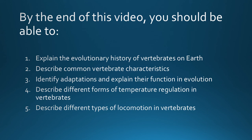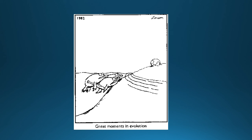Now revisit the five learning points we laid out at the beginning of the video and make sure you have notes on each of them. If you have questions, we may have some time in class, but you can also email me or post questions on Moodle. To wrap it up with a little humor: we can hypothesize what factors led to changes over evolutionary time — like why those lobe-finned fish came out of the water and adapted to living on land. Gary Larson has one hypothesis. Have a great night, and I look forward to seeing you in class.